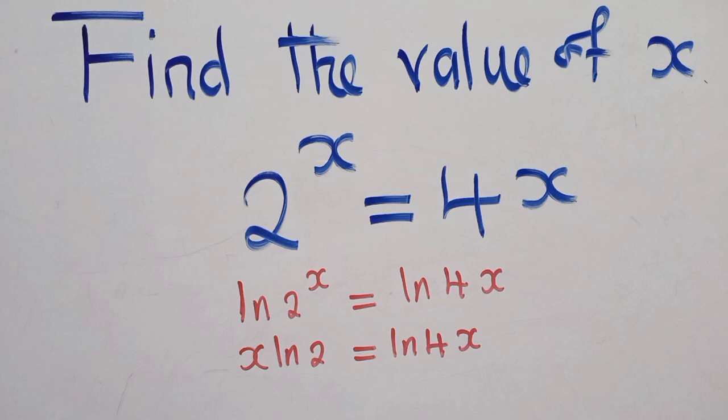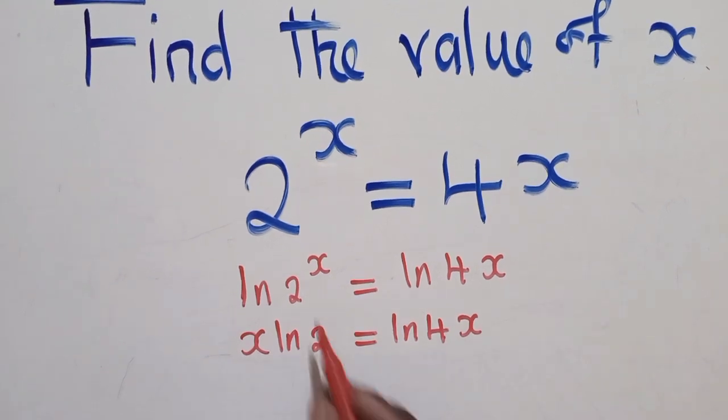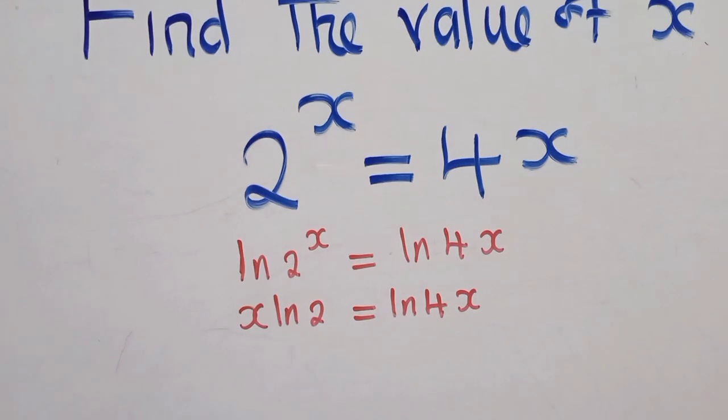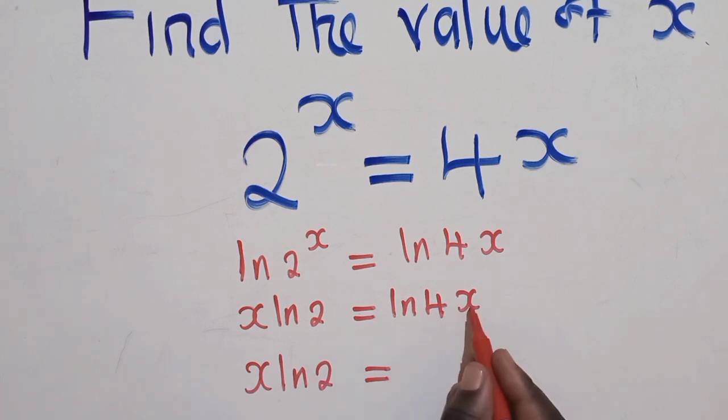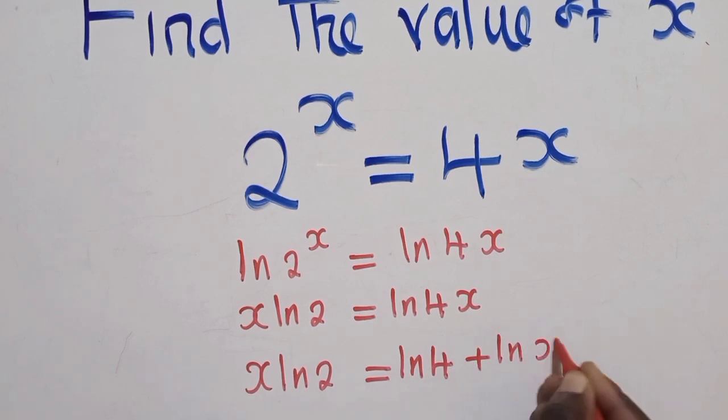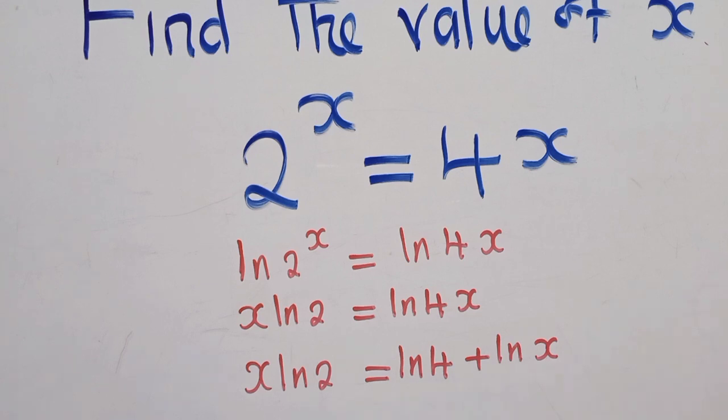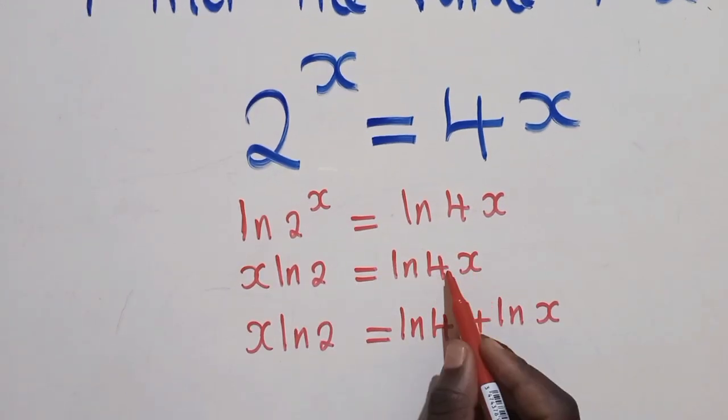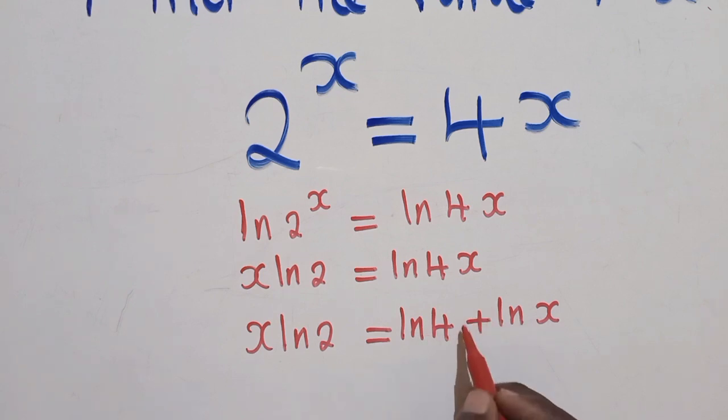Okay, so now the ln has performed its function of dropping the power. Now from this stage, we need to apply the laws or the property of a natural log. So if you can see, we've got 4 and x. So now you can write it as ln of 4 plus ln of x. This is a property. When you've got multiplication, you can write it as plus. You separate these two, 4 and x.